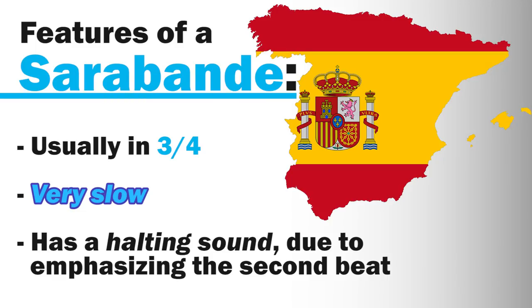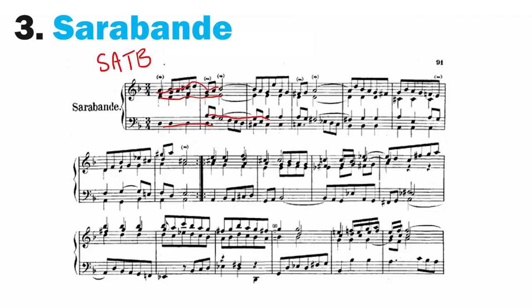Some common features of a sarabande: it's usually in 3/4, it's very slow — the slowest in a dance suite — and it tends to have a halting sound due to emphasizing the second beat. Looking at the music, you can see there's a tie on beat one and then a note on beat two, which you can see in the alto and tenor lines. It's pretty subtle, but something to listen for. So let's take a listen to this moody, singing-like sarabande.